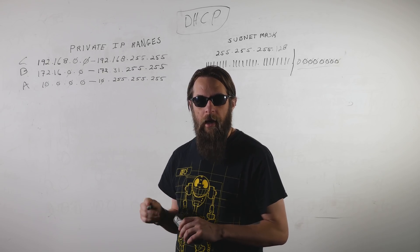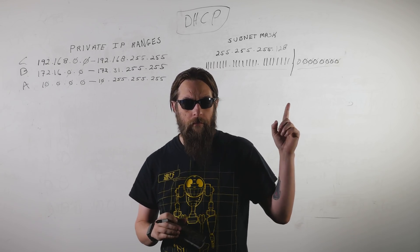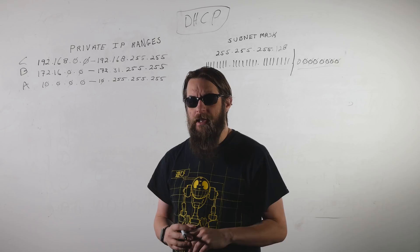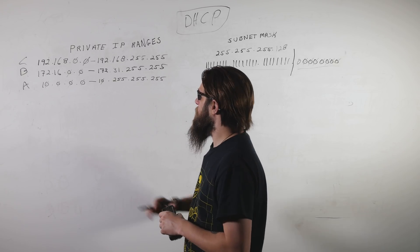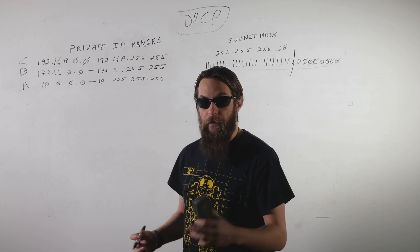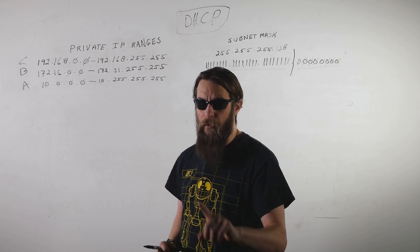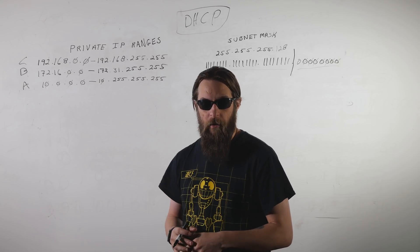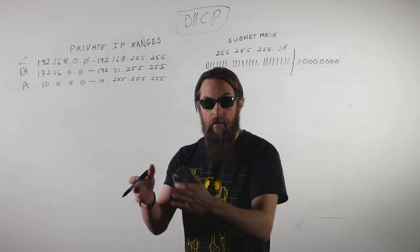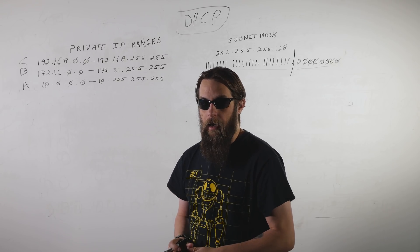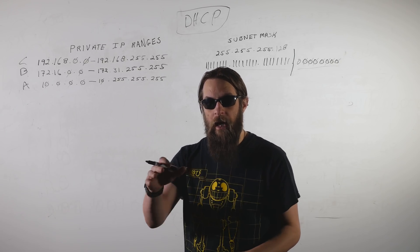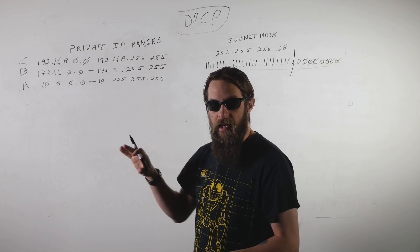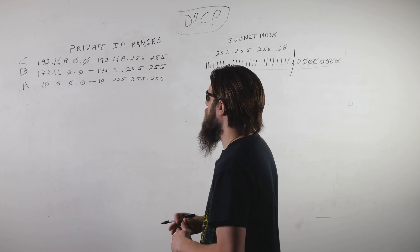To build a network we need to talk about IP addresses and subnet masks, how they're related, and how they're assigned. An IPv4 IP address is a 32-bit address that is assigned to your computer when it connects to a network, or that you assign to your computer when you connect it to a network. That determines what network you are connected to, and we're going to go into details of how that is decided from a technological standpoint.